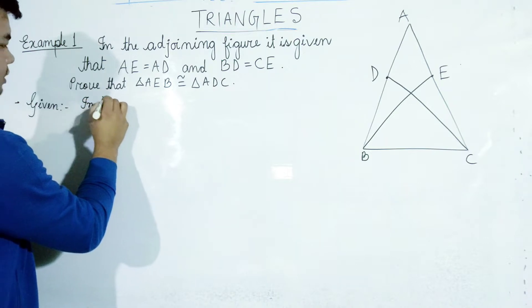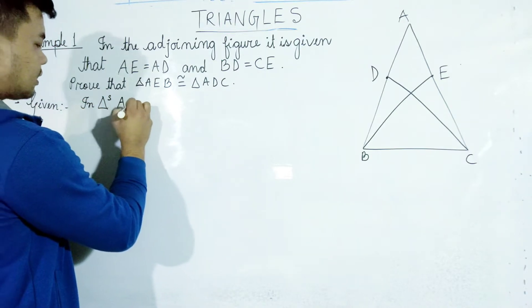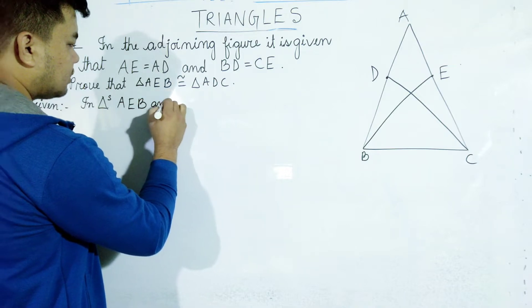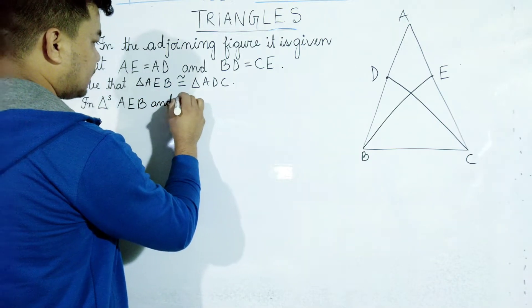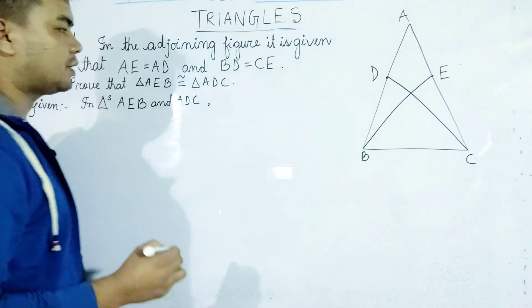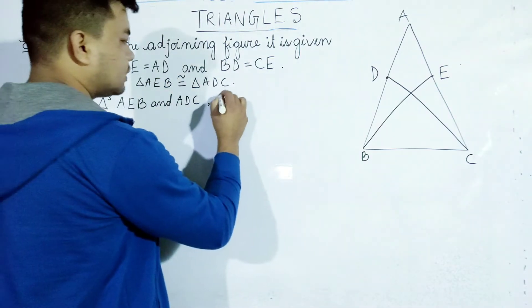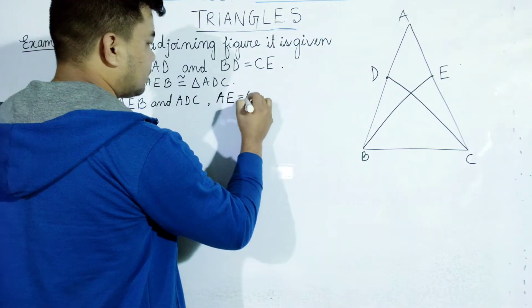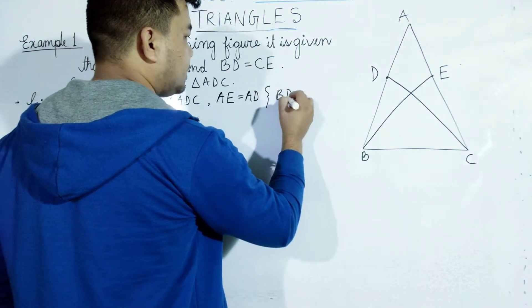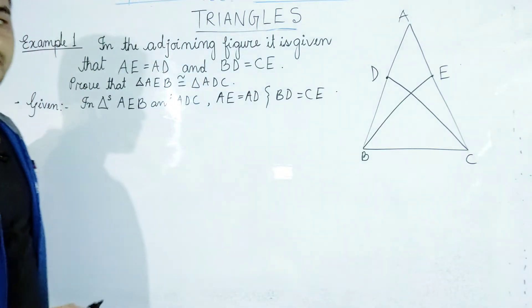In triangles, we have a triangle here — AEB and ADC have a triangle. This is the same. AE is called AD and BD is called CE. This is the same.